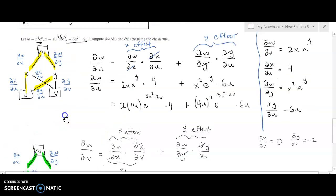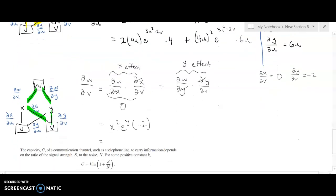So lastly, I just want to get everything in terms of u and v since those are the underlying variables here. So x, recall, is equal to 4u. So we're going to replace x squared with 4u squared. e to the y, recall that y is 3u squared minus 2v. And all of that multiplied by negative 2. So I'll just stick my negative 2 out front over here. And there's our final answer for dw/dv.